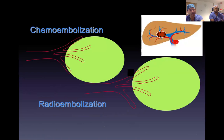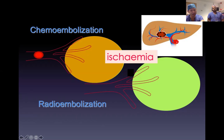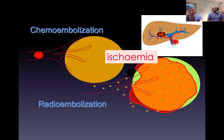In terms of chemoembolization, that's blocking the blood supply with chemotherapy beads. We use really big beads which stop the blood getting to the tumour, causing tumour damage through ischaemia — losing its blood supply — and then soaking the tumour with chemotherapy. When we talk about radioembolization, the particles are an order of size smaller — they're not blocking the blood supply, but they're delivering a massive dose of radiation just to the tumours.